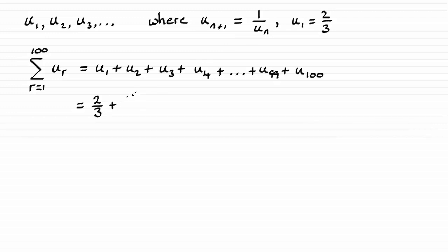One divided by two thirds is three over two — you just invert the fraction. Then u3 is one divided by u2, one divided by three over two, which again is two thirds. So clearly there's a pattern emerging: u4 is one divided by u3, one divided by two thirds, back to three over two again.